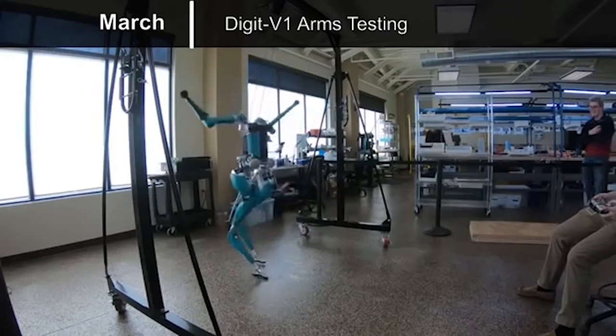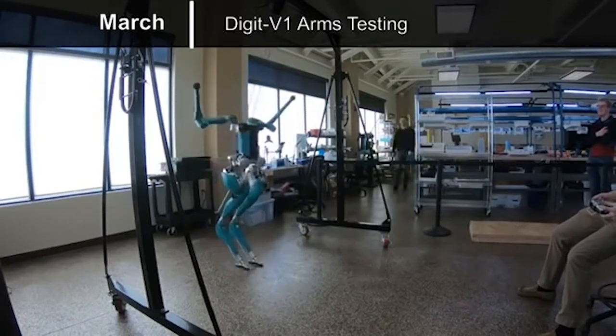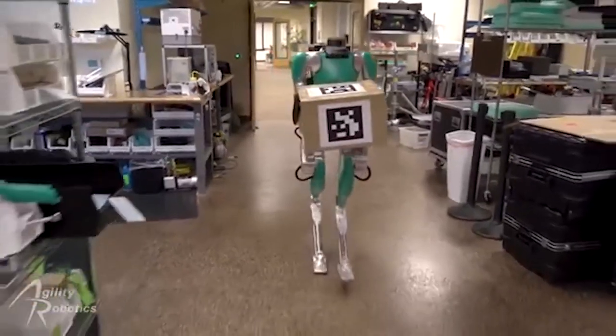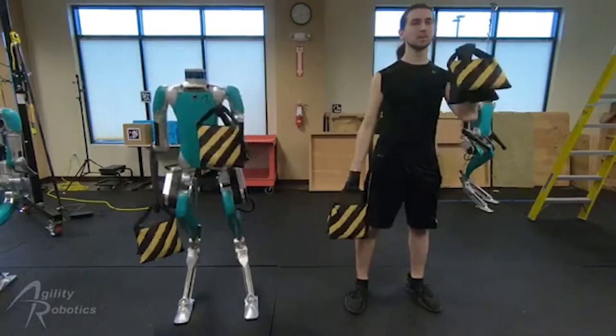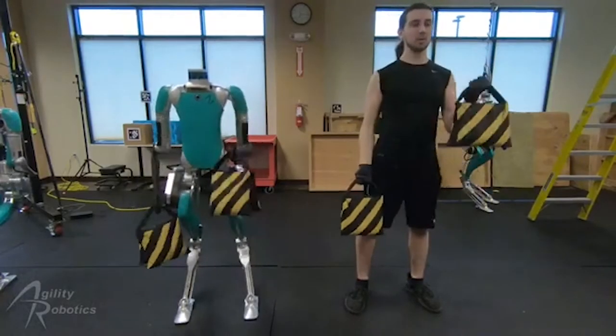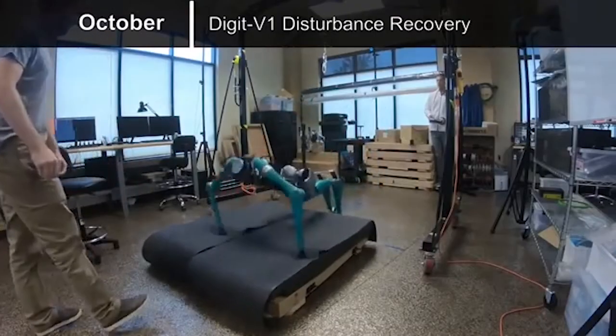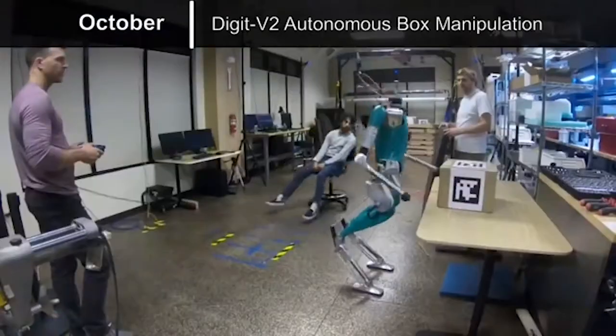Most importantly, it has two arms with four degrees of freedom. These arms are useful for mobility as well as for grasping. Digit is strong enough to pick up and stack boxes weighing up to 40 pounds or 18 kilograms, as well as durable enough to catch itself during a fall using its arms to decelerate.